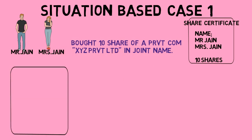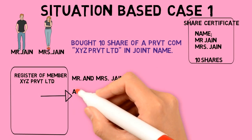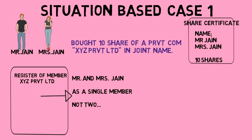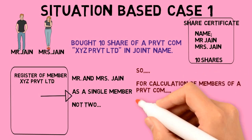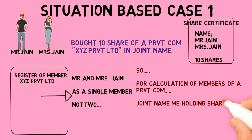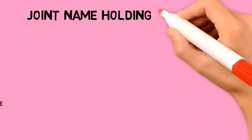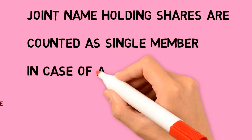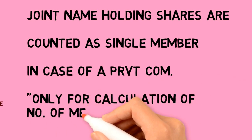Under the register of members of XYZ Private Limited, Mr. Jain and Mrs. Jain are included as a single member and not as two members. So for calculation of members of a private company, joint name holding shareholders are counted as a single member. Remember: this is only for the calculation of the number of members and not otherwise.